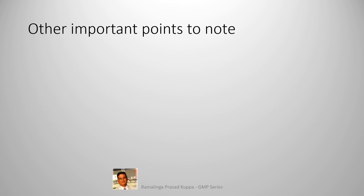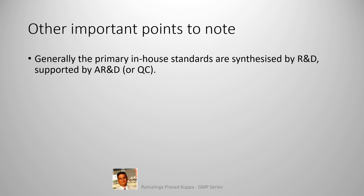Generally, the primary in-house standards are synthesized by R&D, supported by AR&D or QC. The API or impurities are synthesized by R&D and evaluated by AR&D. If the company is not equipped with the necessary equipment for structure elucidation, it is done by an approved, reliable outside laboratory. However, all data generated by the external laboratory should be reviewed for accuracy by the internal R&D and AR&D teams.